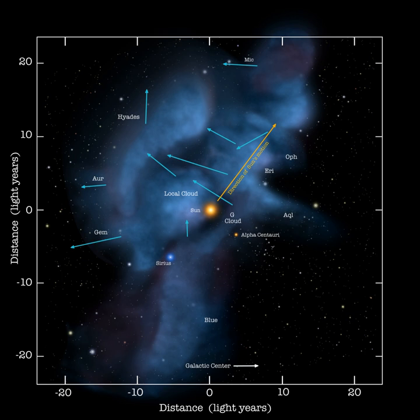The sun is near the edge of the Local Interstellar Cloud. It is thought to have entered the region at some point between 44,000 and 150,000 years ago and is expected to remain within it for another 10,000 to 20,000 years. The cloud has a temperature of about 7,000 K — 6,730 degrees Celsius or 12,140 degrees Fahrenheit — about the same temperature as the surface of the sun.